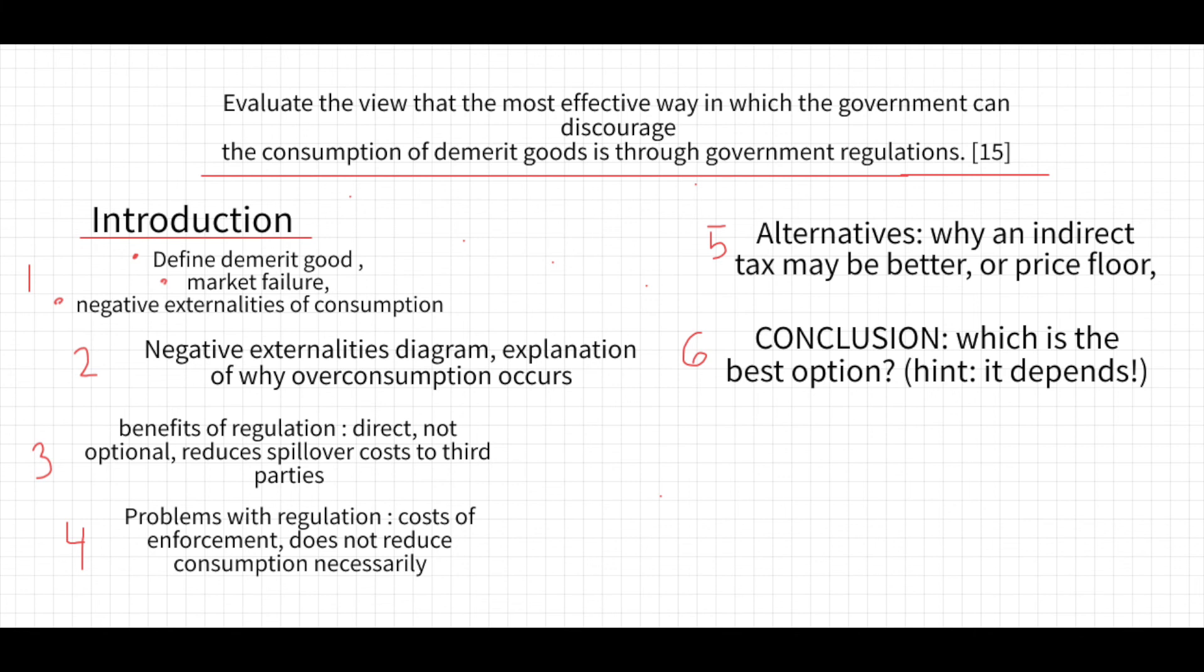And then you have the alternatives: why could an indirect tax be better or a price floor, etc. You can also have some diagrams showing the indirect tax to strengthen your answer. And this is where you need a conclusion. In the 10 marker, you don't necessarily need a conclusion because you're not evaluating, you're just explaining. But here you need a conclusion saying clearly which you think is the best measure and which scenarios.